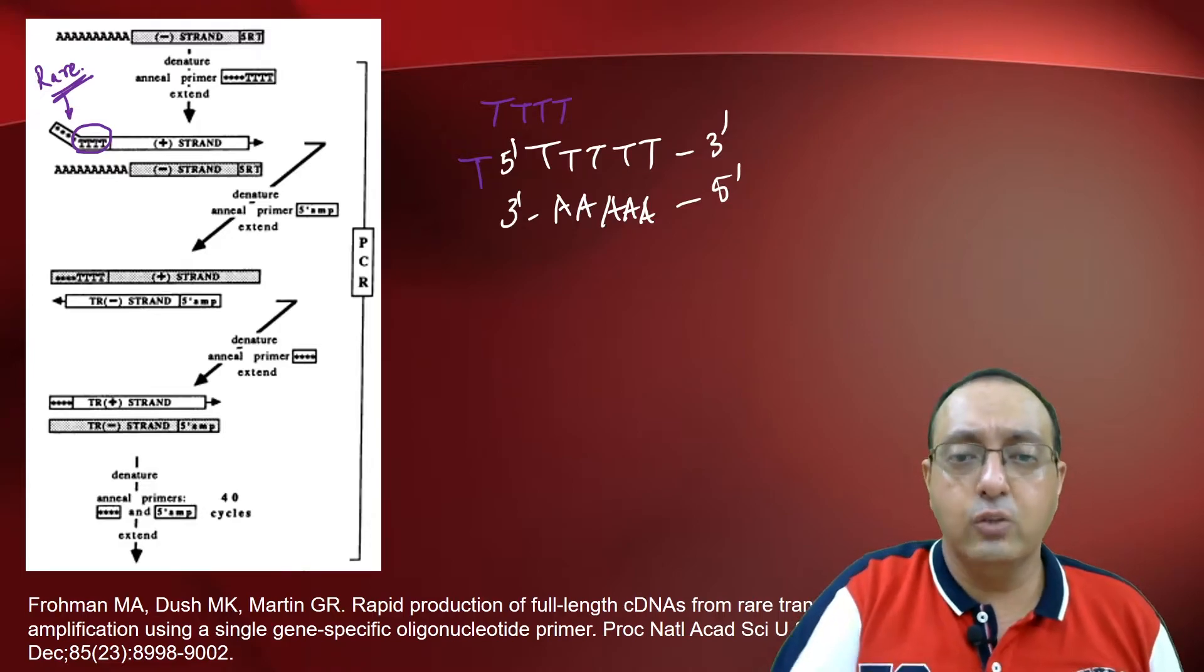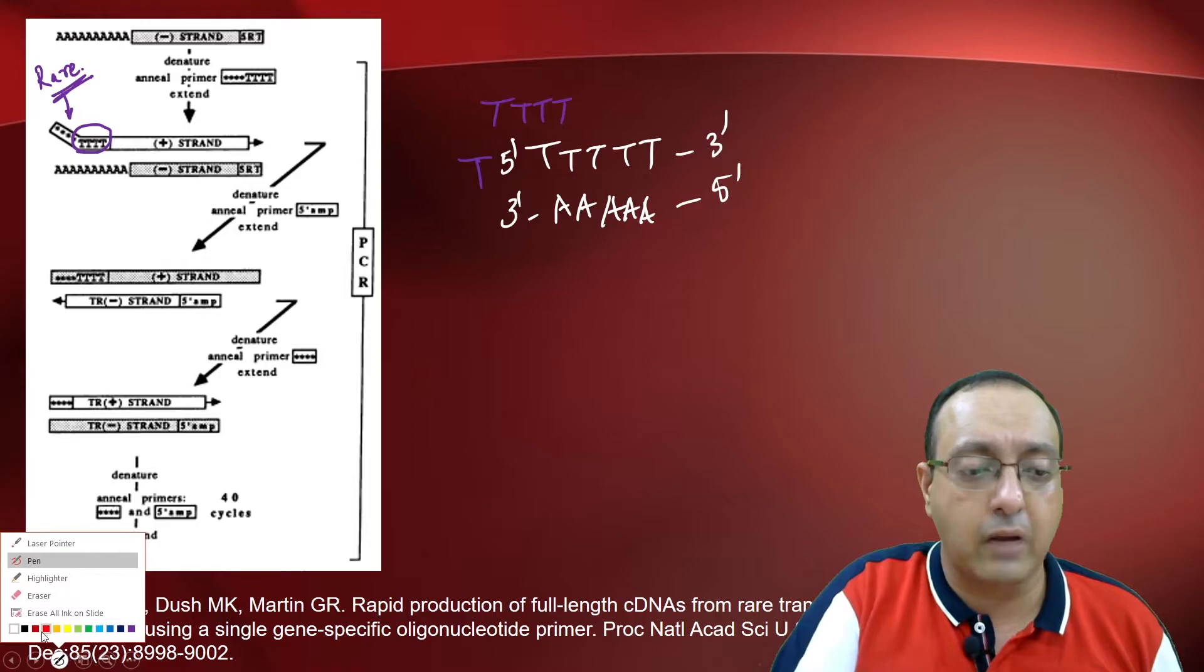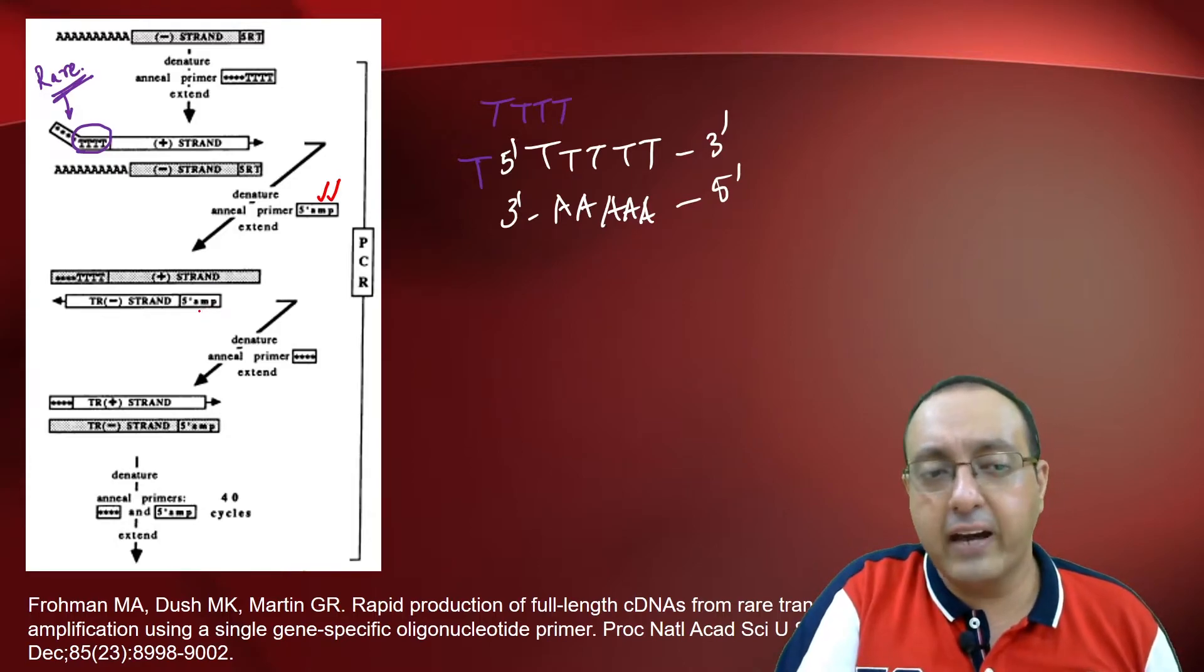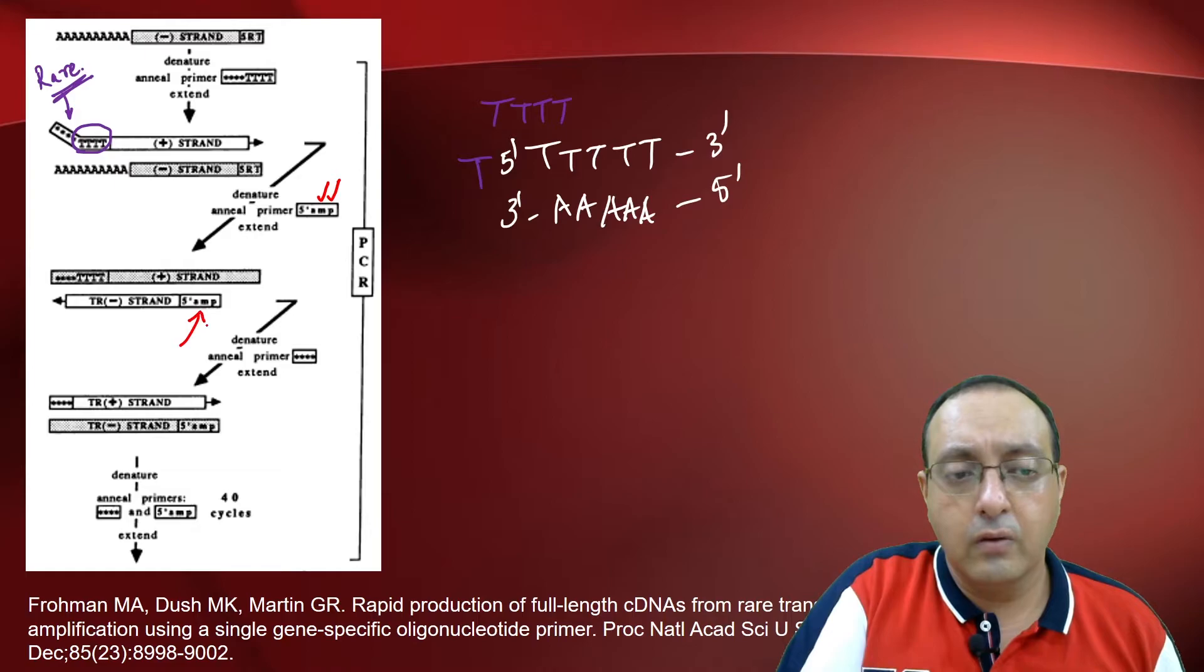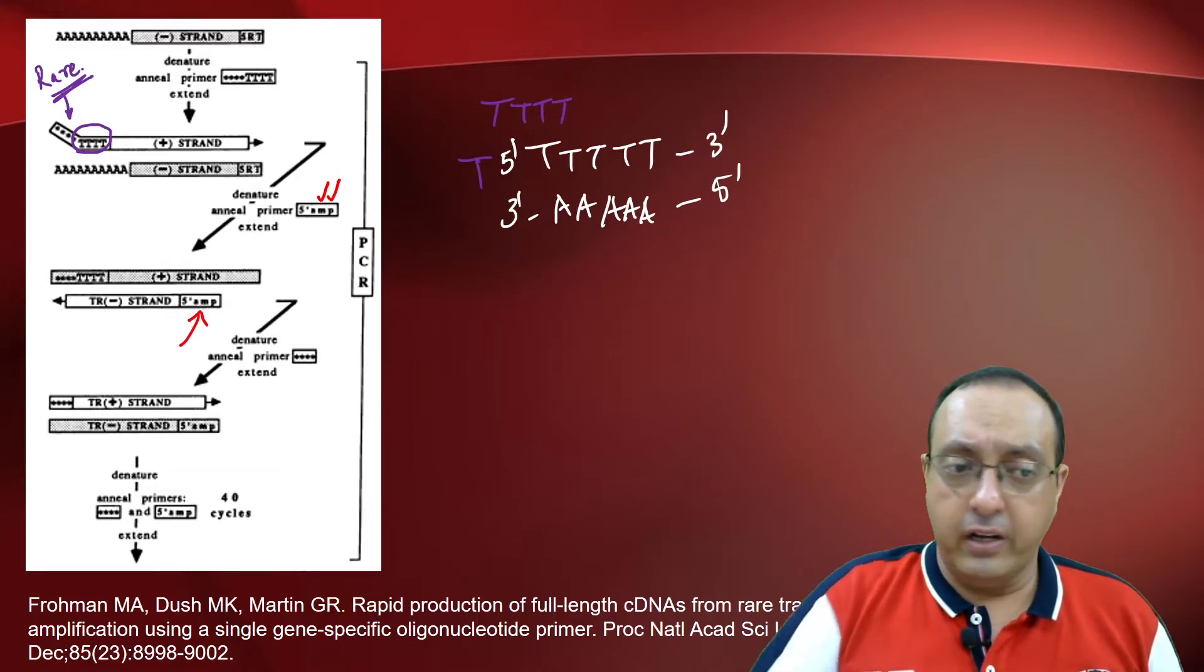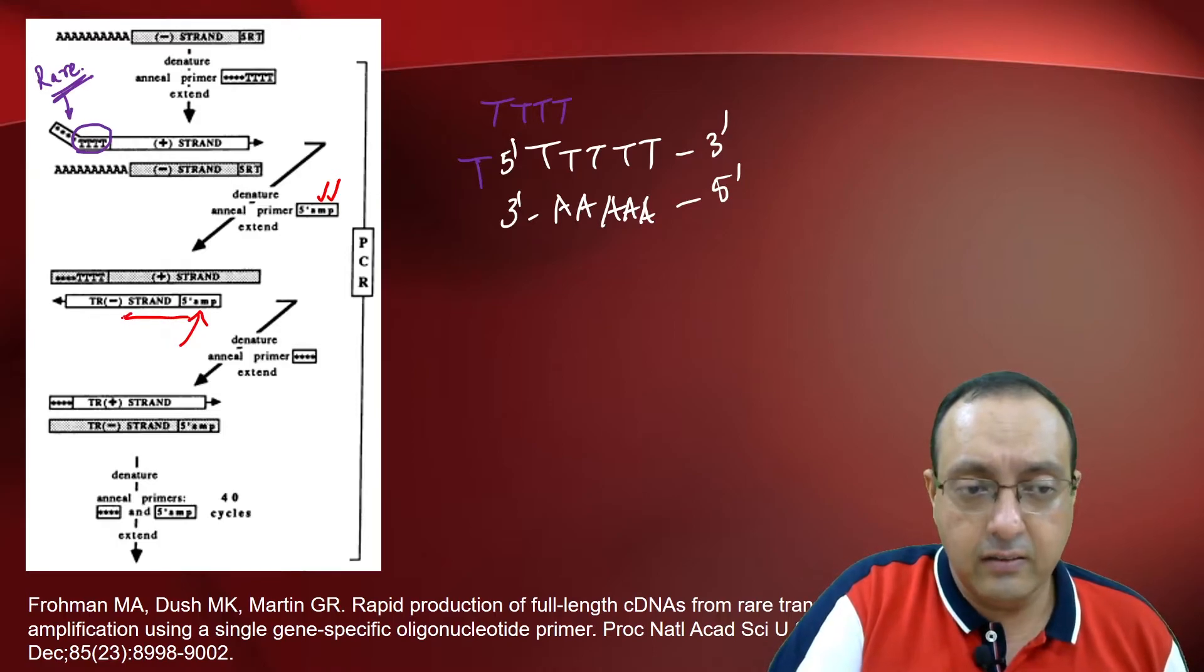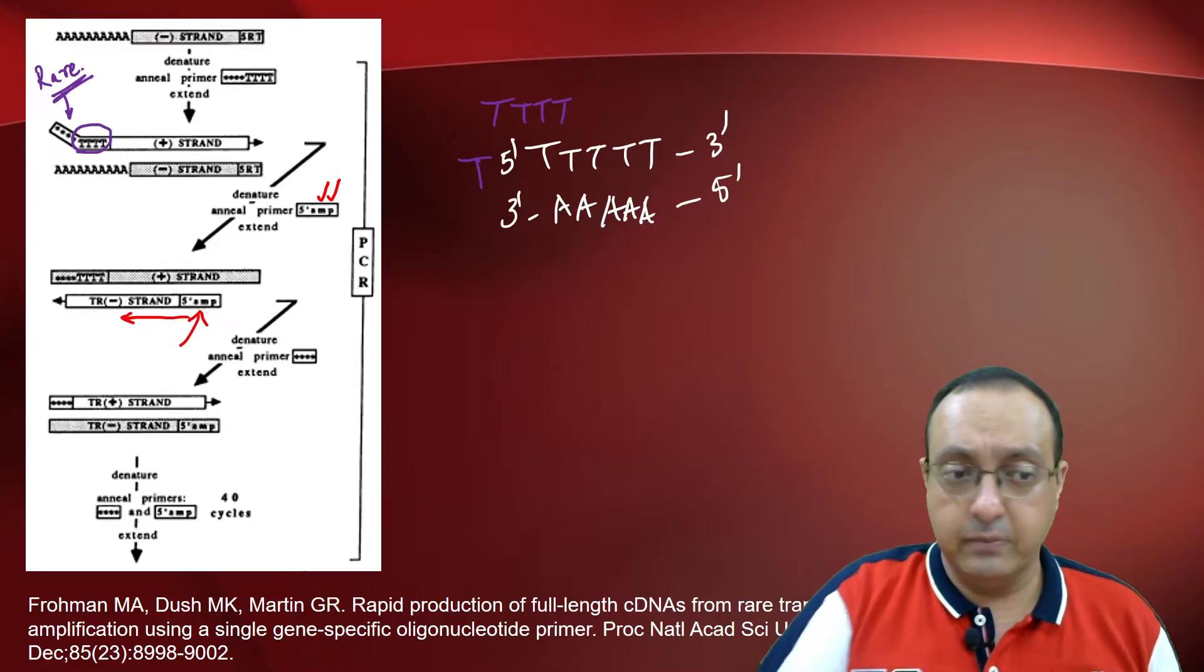Now you will denature it and you will anneal another primer which is called the 5' amplification primer or the gene-specific primer and it will hybridize very close to the 5' end of the mRNA. And now you will extend it using the plus strand as your template.